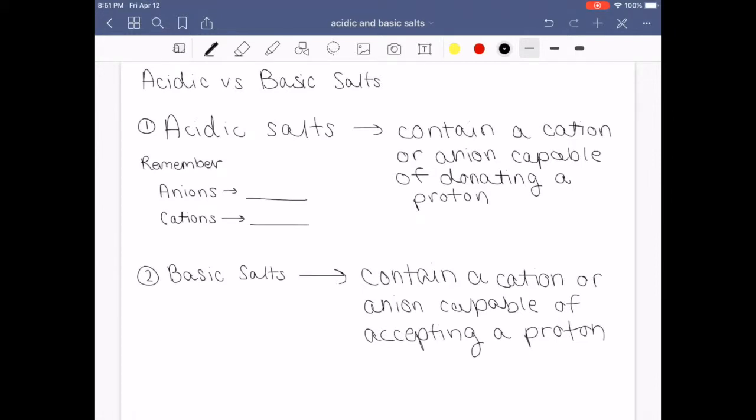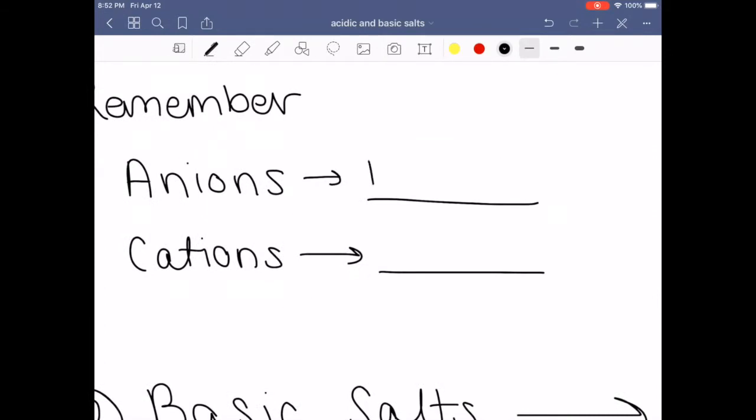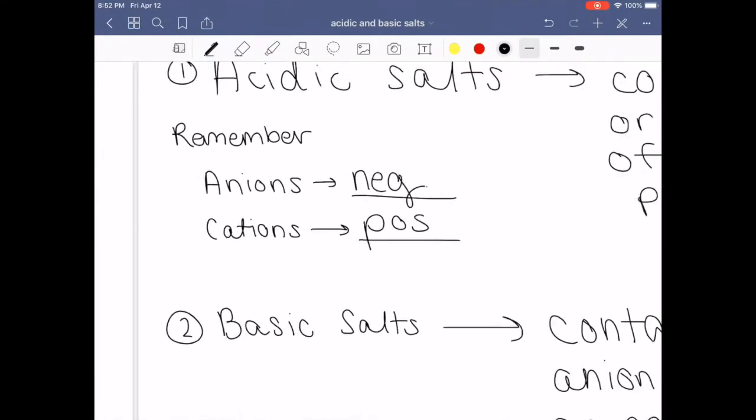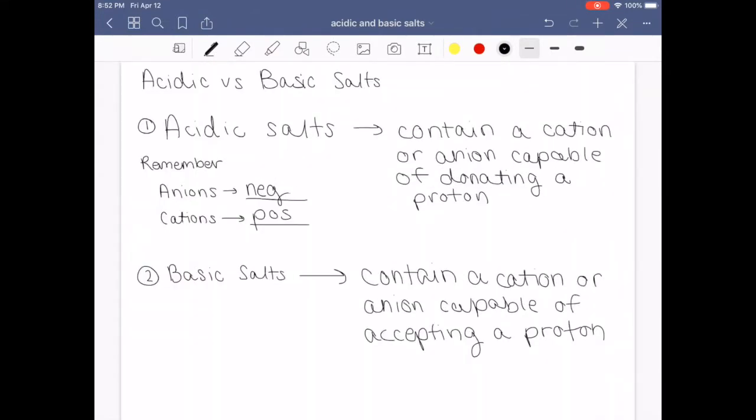Acidic salts are capable of donating a proton. It has to have a proton to donate to be able to be an acidic salt. And it can be either the cation or the anion. If you remember from Gen Chem 1, anions are negative and cations are positive. It can be either the anion or the cation, but the most important thing is it has to have a proton to donate.